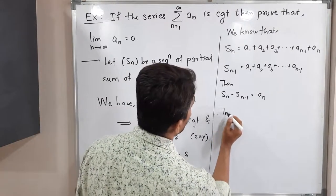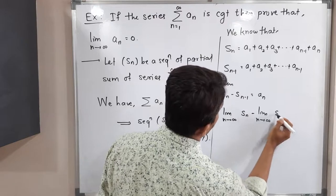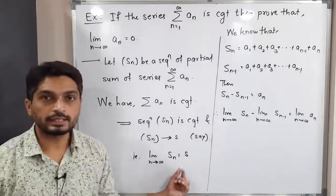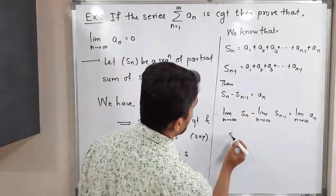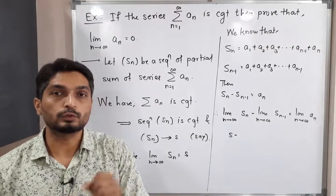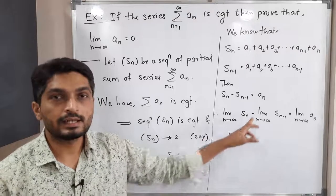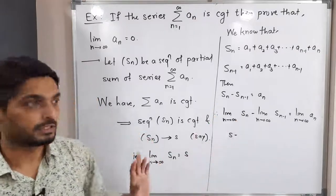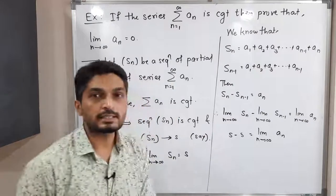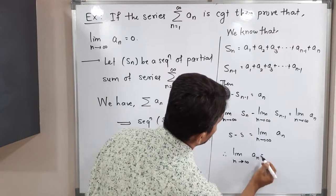So let us apply the limit to both sides. We get limit n tends to infinity of S_n minus limit n tends to infinity of S_{n-1}, which equals limit n tends to infinity of a_n. Since limit n tends to infinity of S_n equals S, and since S_{n-1} is just S_n with one term removed, it also converges to the same point S. Therefore S minus S equals limit n tends to infinity of a_n, which gives us limit n tends to infinity of a_n equals 0.